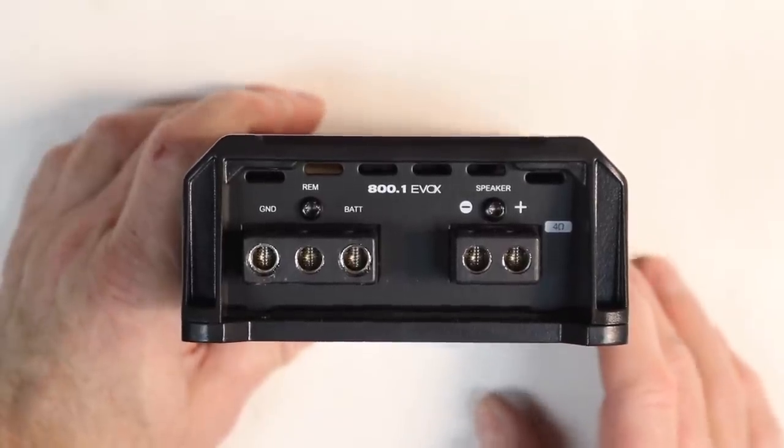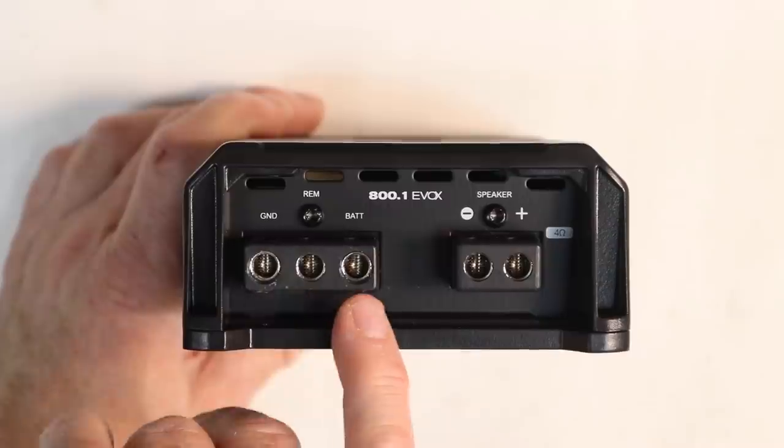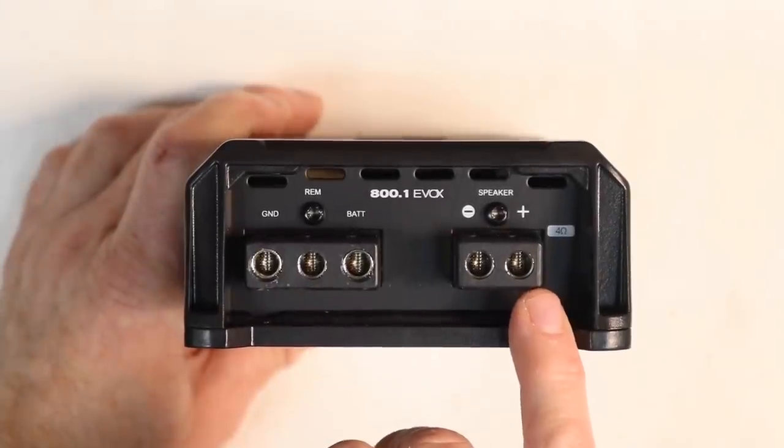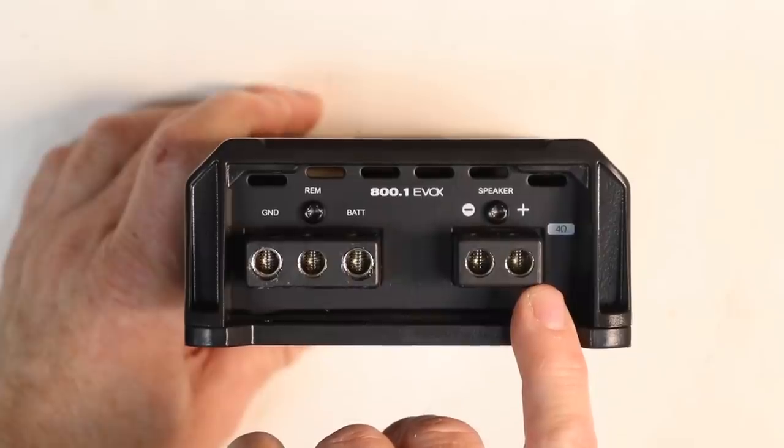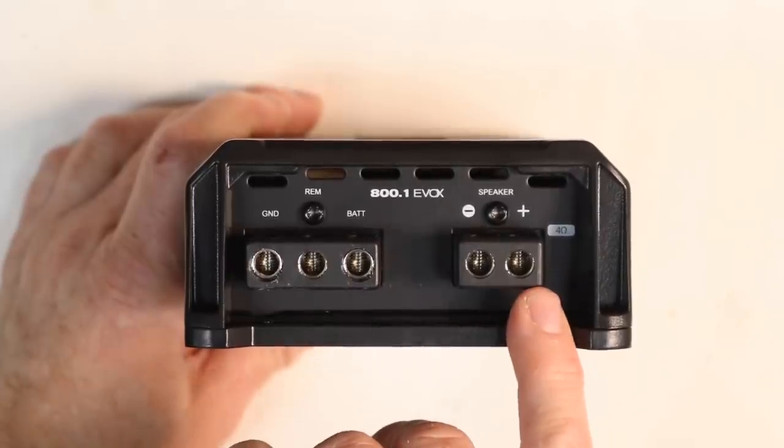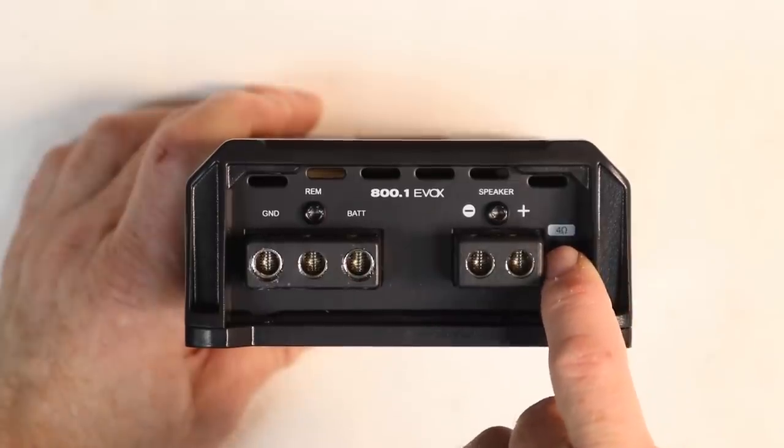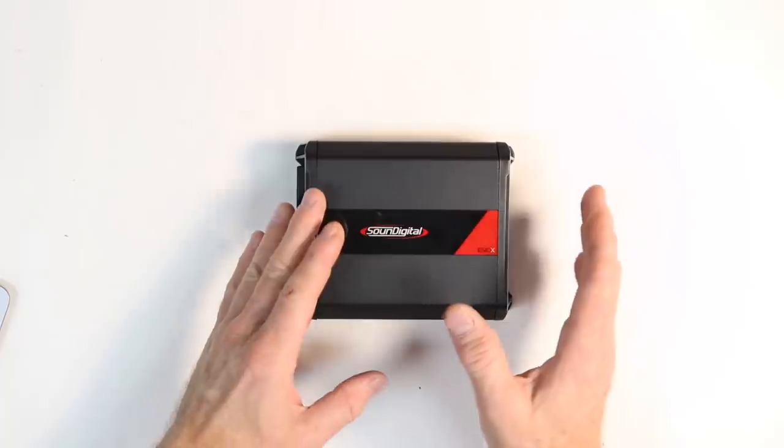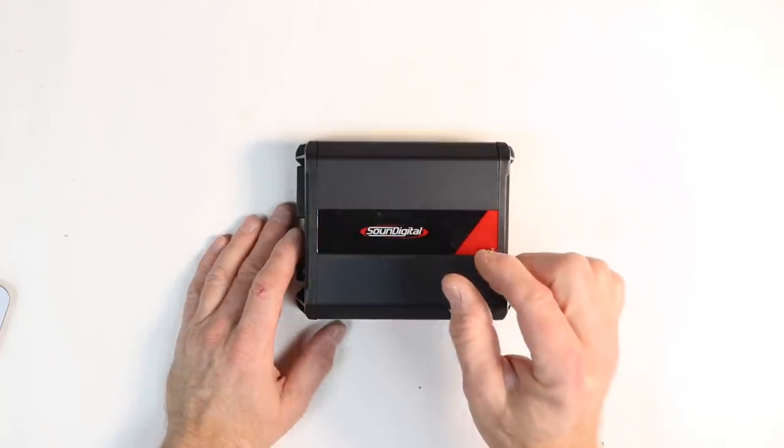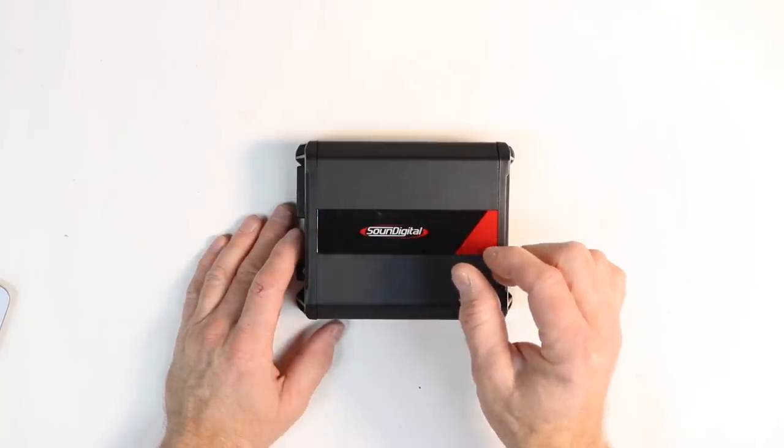On the opposite end power inputs. Oxygen free 8 gauge is recommended. Ground, remote, battery. The same size terminals here on your output. That means you can put up to an 8 gauge for your output if you'd like. Negative on one side positive on the other. In the corner you'll notice this ohm load. These do come in different ohm load configurations both 2 and 4 ohm. That indicator on the side of the amp is what tells you what it is capable of doing.